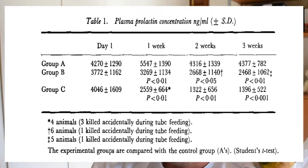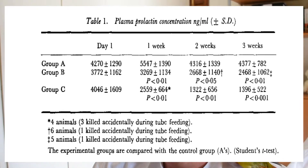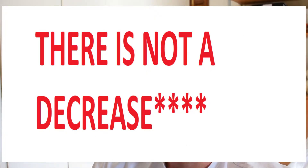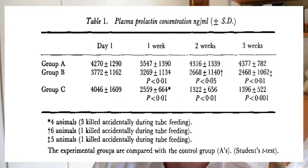These are the results — group C is the group we're interested in because we're looking at masteron. You can see there is a massive decrease after a week, which continues to decrease, and around the third week it stabilizes. The p-values indicate that this is a significant and clinically significant decrease in prolactin levels. It would have been nicer if masteron was used by itself, but it does possibly have an ability to decrease prolactin levels.